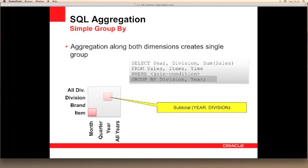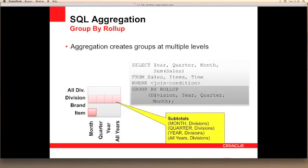Traditionally, we use sum and group by operations to create and aggregate along the two dimensions to derive a single group. So in this example here, we've created a subtotal of year and division. But if we want to create subtotals at the division level for all levels within our time dimension, then we need to extend the group by clause using the roll-up syntax and specify the levels that we want to calculate.